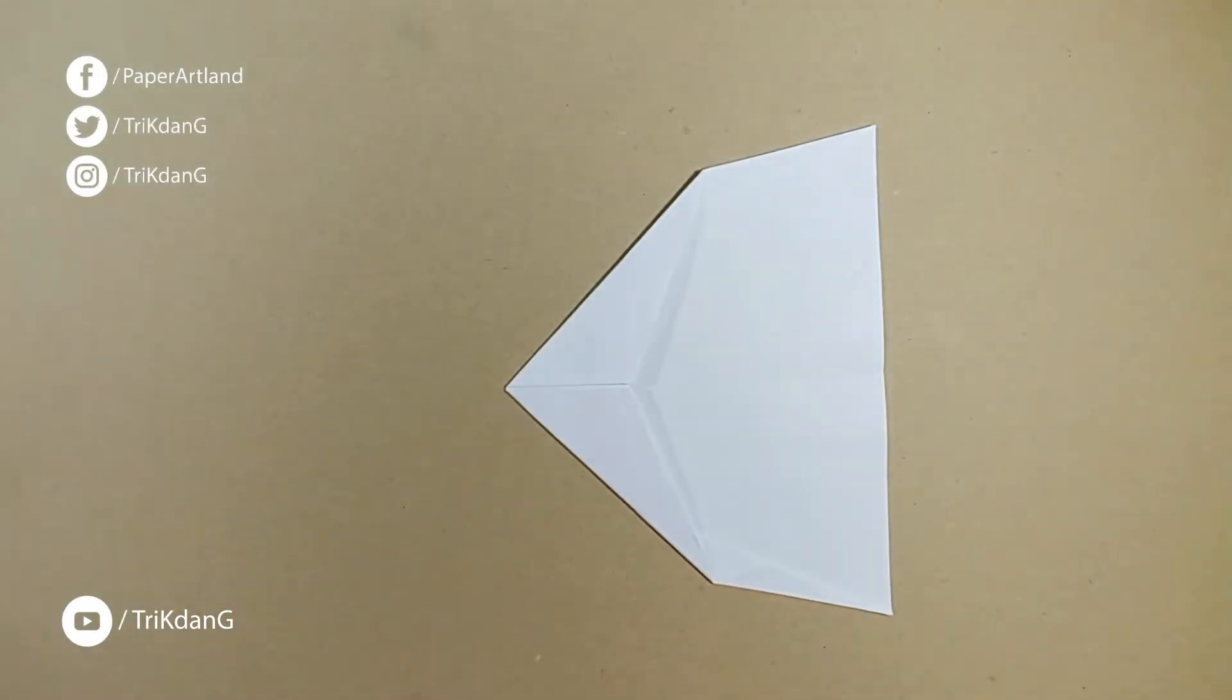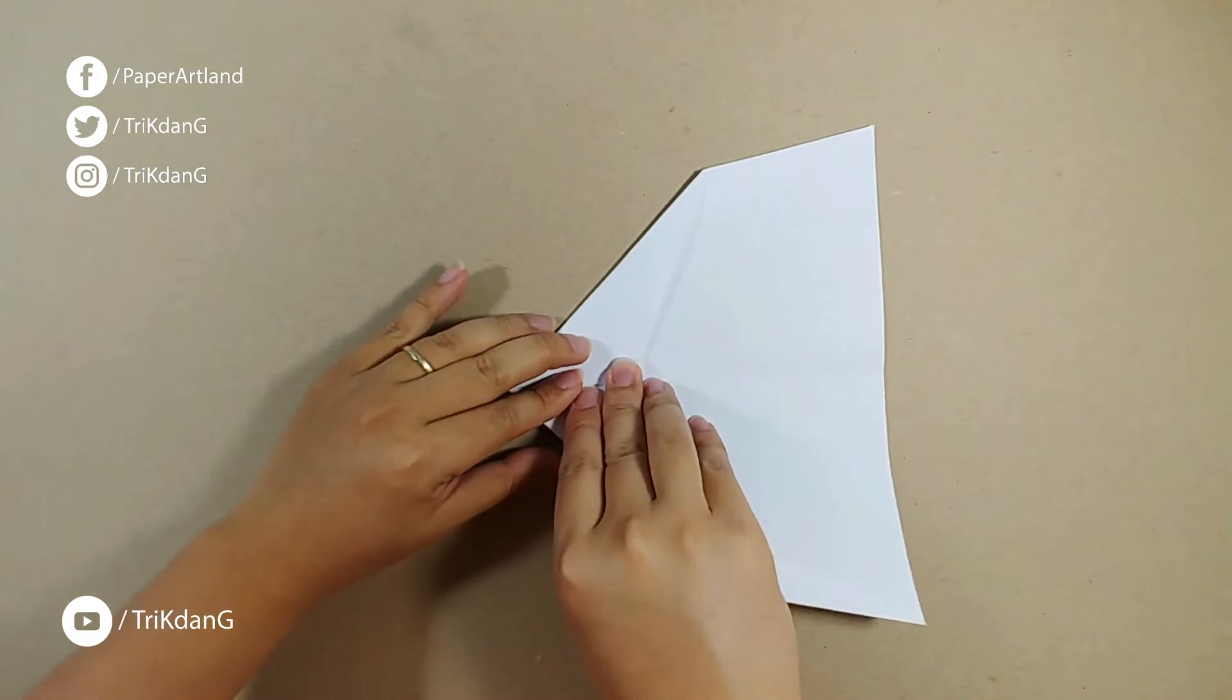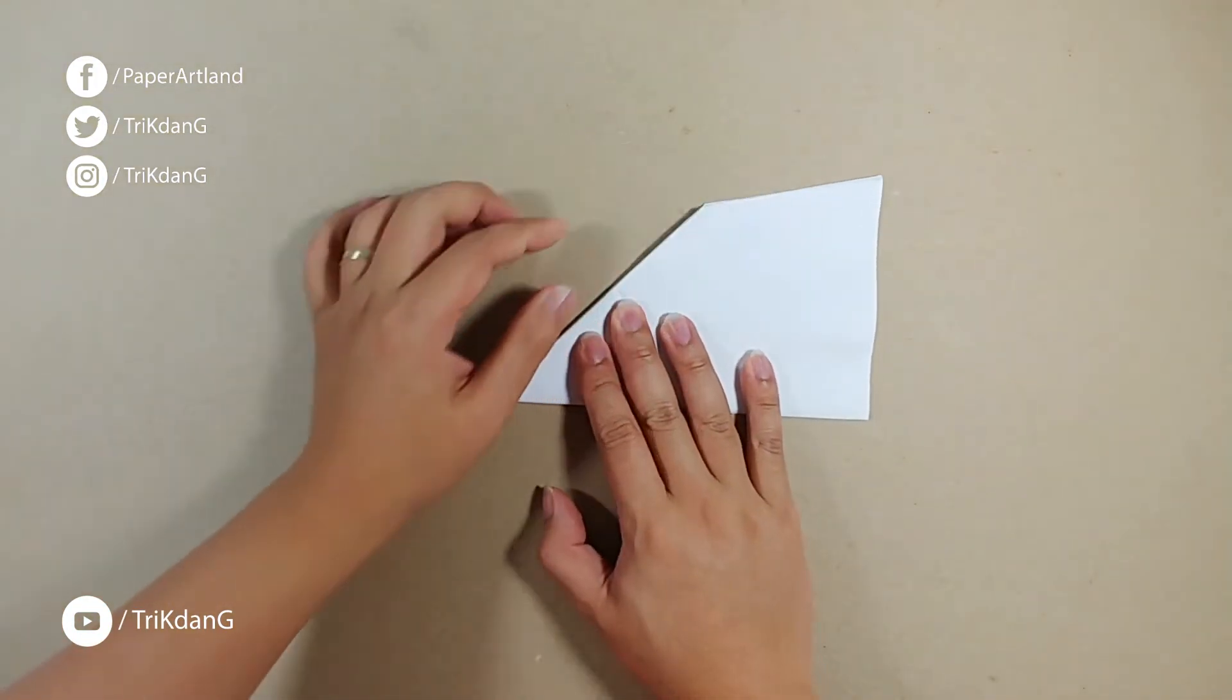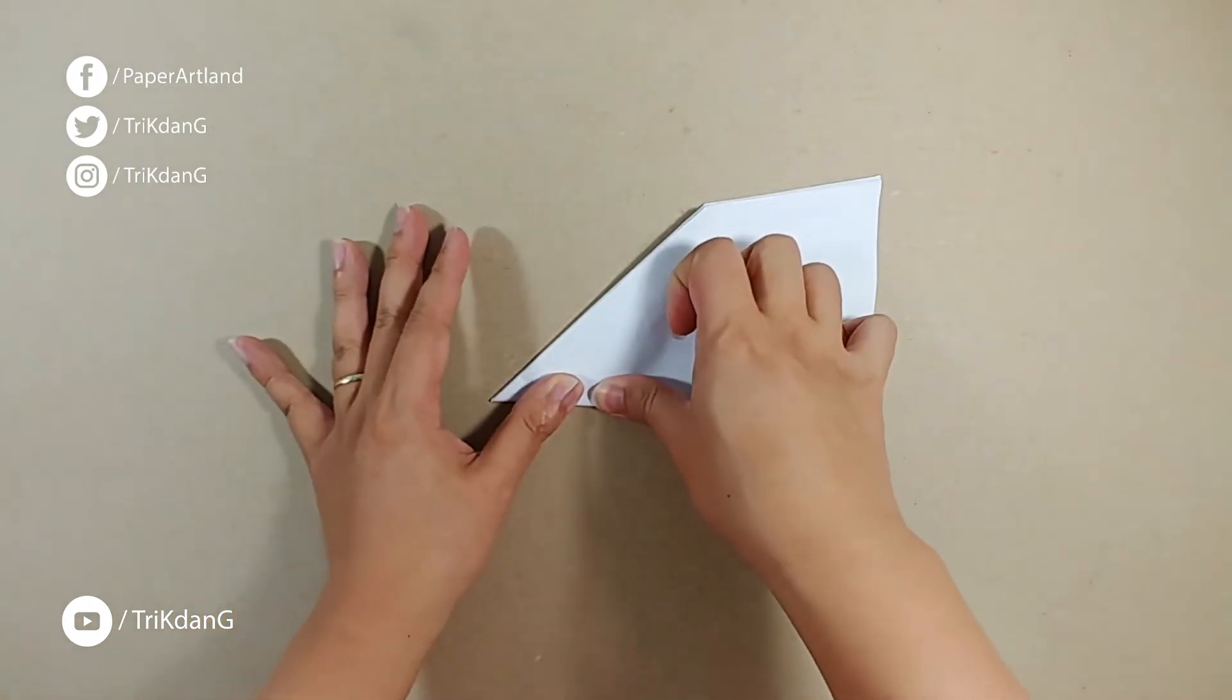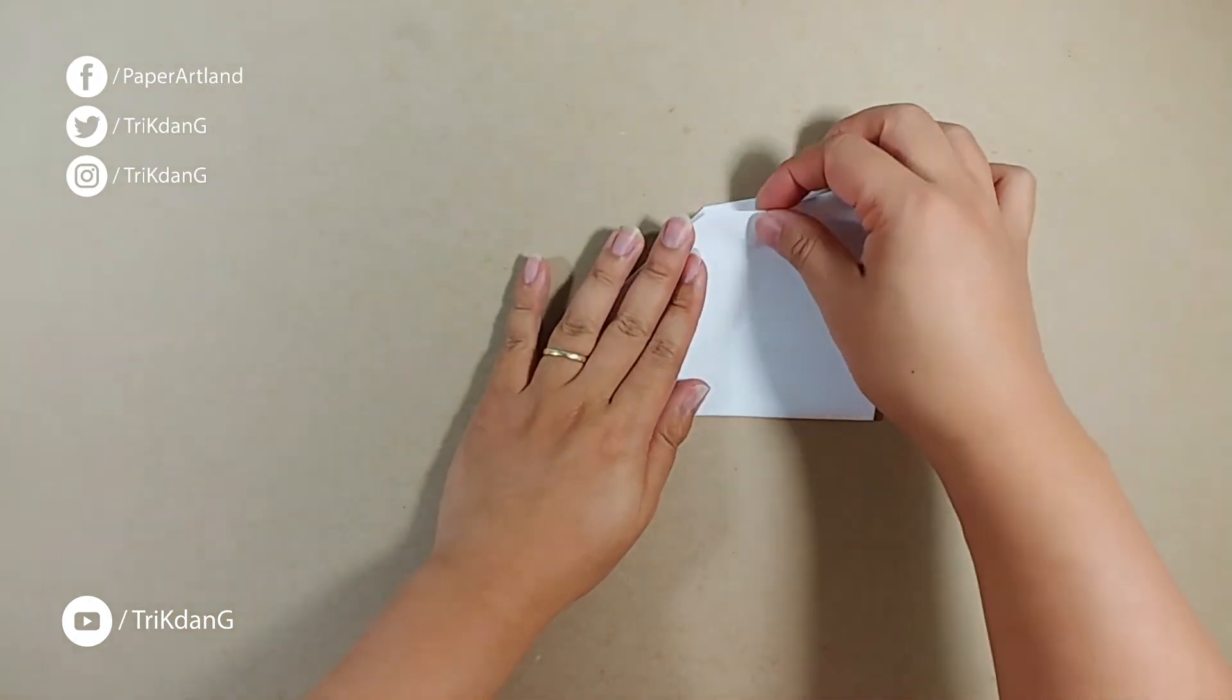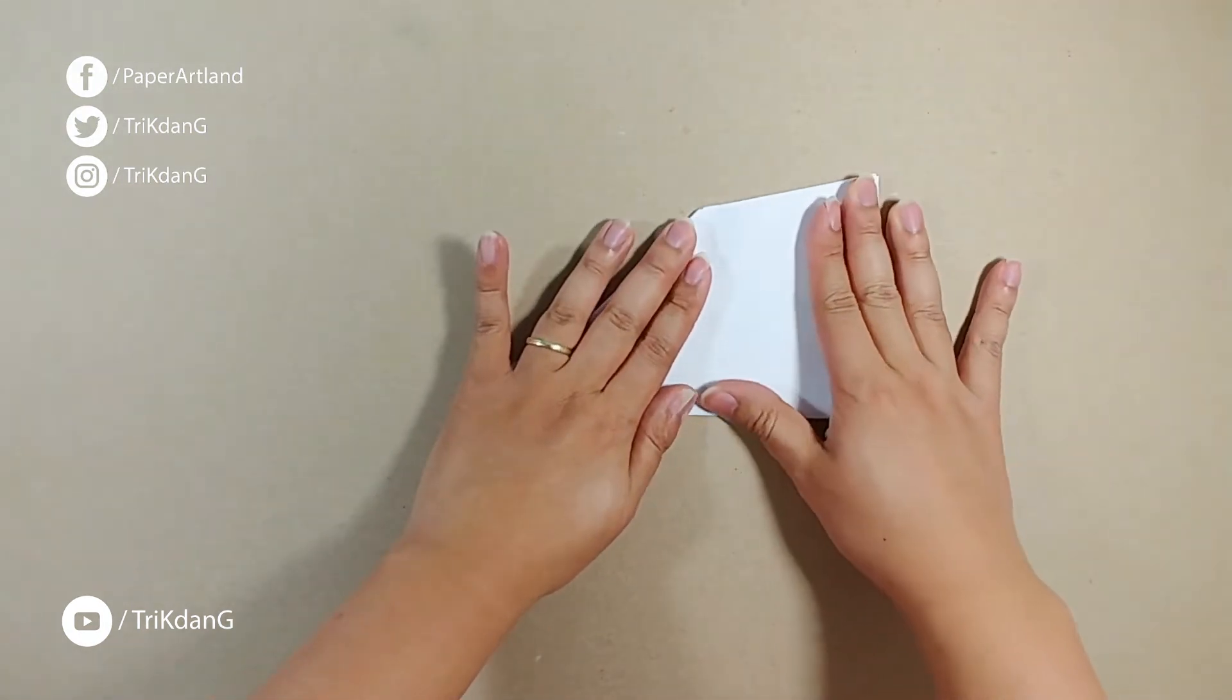So, we just finished the hardest step of the paper airplane. Next step, let's fold the paper in half. Alright, so adjust the paper and press it down. This is a tricky fold as well. If you don't fold correctly, the plane may not fly well at all.